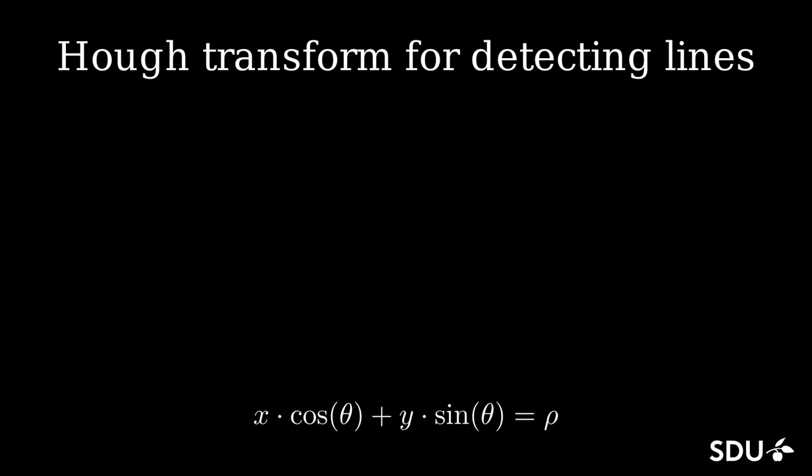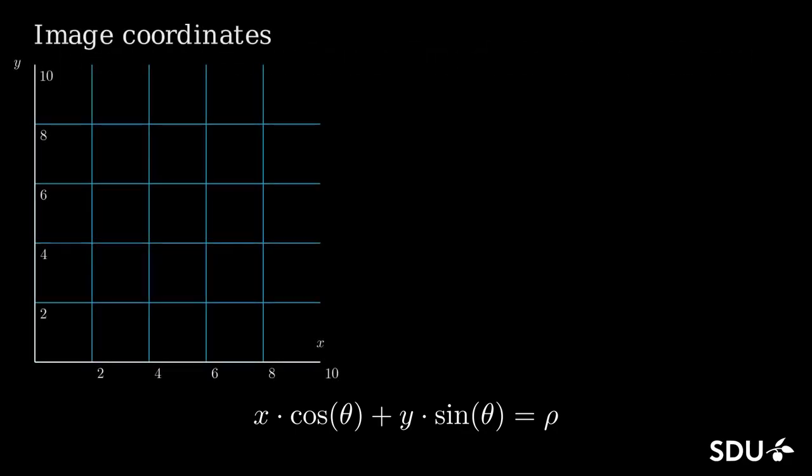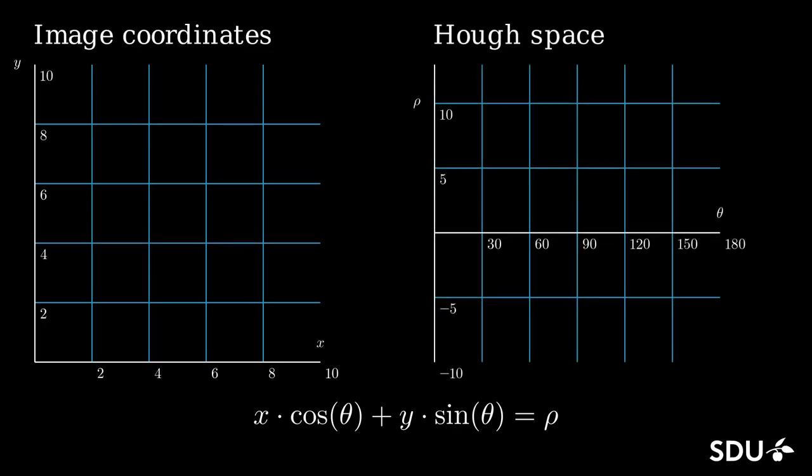Let's take a closer look at the Hough Transform and the mathematics behind it for detecting straight lines in an image. The Hough Transform connects image coordinates with parameters in a so-called Hough space through the equation shown at the bottom of the screen.